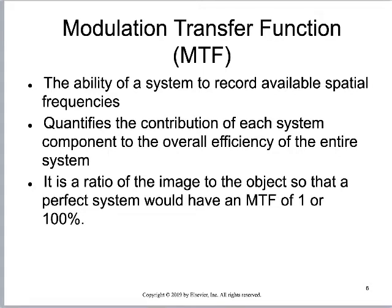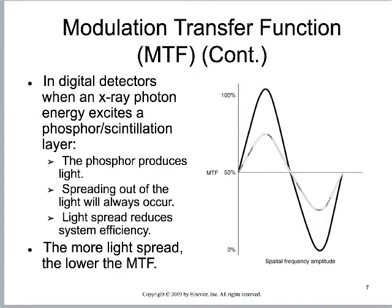There are different systems: PSP or CR systems and flat panel detector systems. We want an MTF value close to 1, meaning close to 100% representation. Things that would reduce MTF below 100% include the phosphors used — for example, the europium-doped barium fluorohalide in a PSP system emits light that spreads, causing light pollution. That light spread reduces the system's efficiency and lowers the modulation transfer function.